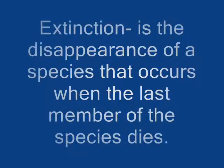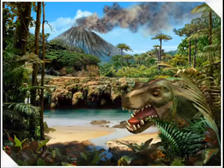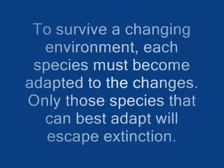Extinction is the disappearance of a species that occurs when the last member of the species dies. To survive a change in environment, each species must become adapted to the changes. Only those species that best adapt will escape extinction.